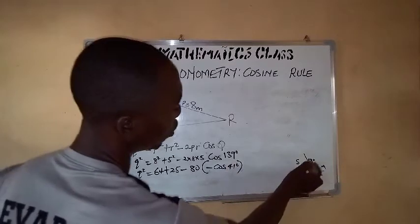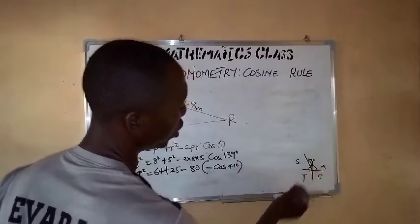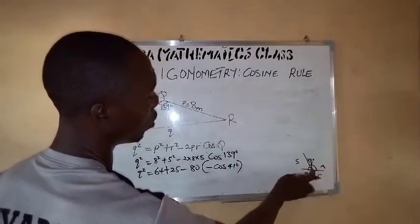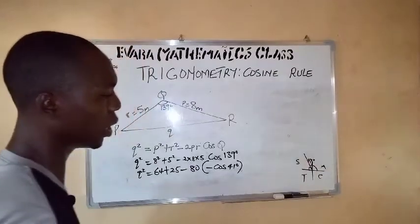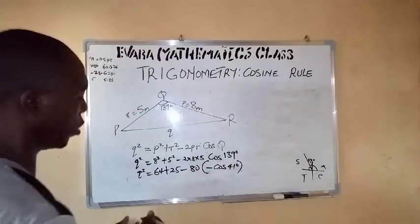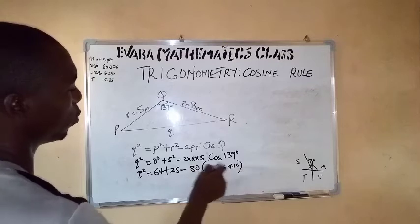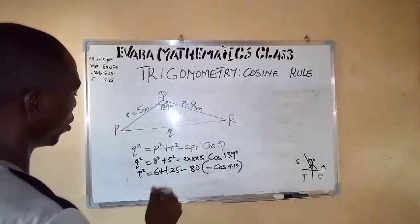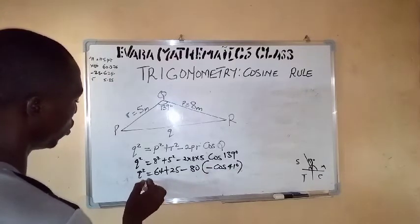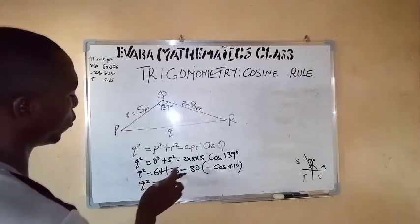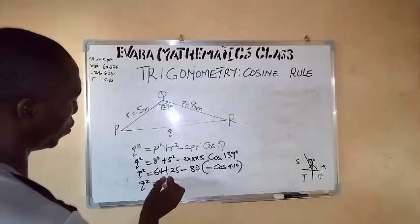minus cos this angle that we have left here, which is 41. Remember the totality of the angle here is 90 degrees, so if we take 49 out of 90, we are left with 41 degrees.